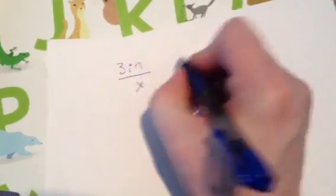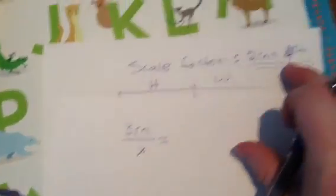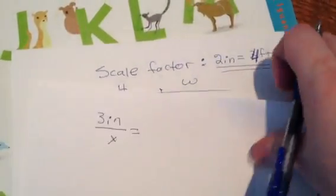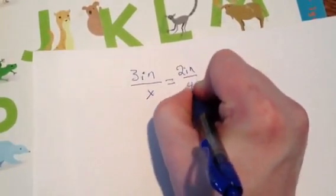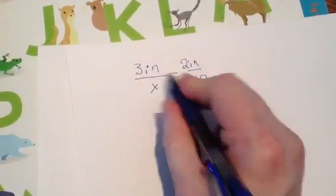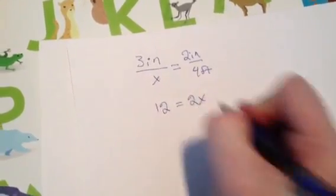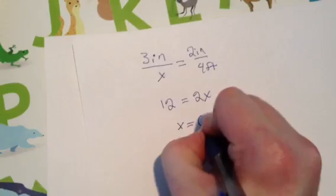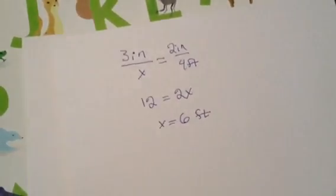So if I want to take that foreground box, which is three inches in size, and scale it up to some amount in real world feet, I'm going to do three inches is to X. Again, my scale factor is two inches equals four feet, so I will write two inches over four feet. Cross multiply gives me twelve equals two X.